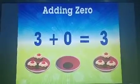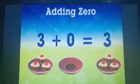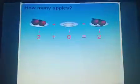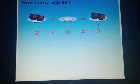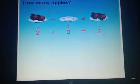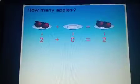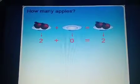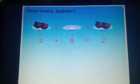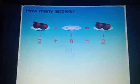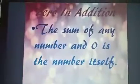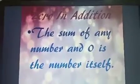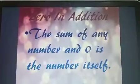Thus, there are 3 cakes in all. Let's see another example. There are 2 apples in the first plate and no apple or we can say 0 apple in the second plate. So, 2 plus 0 is also equal to 2. Thus, it can be concluded that the sum of any number and 0 is the number itself.